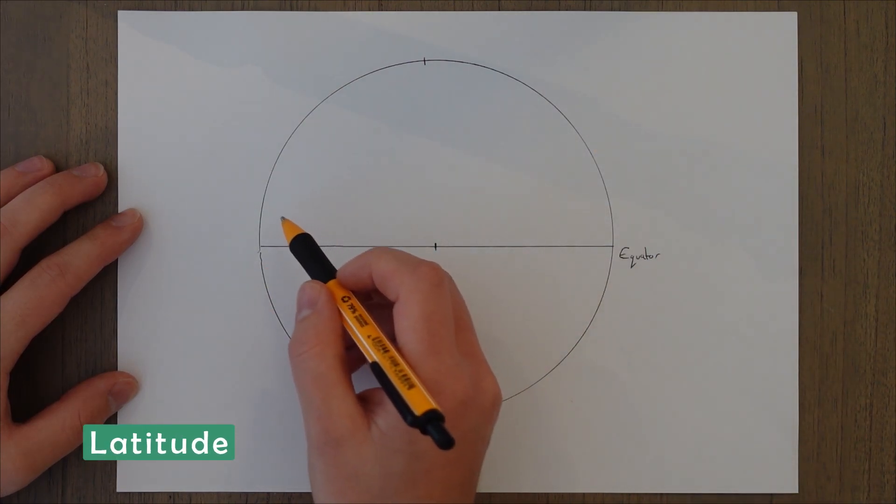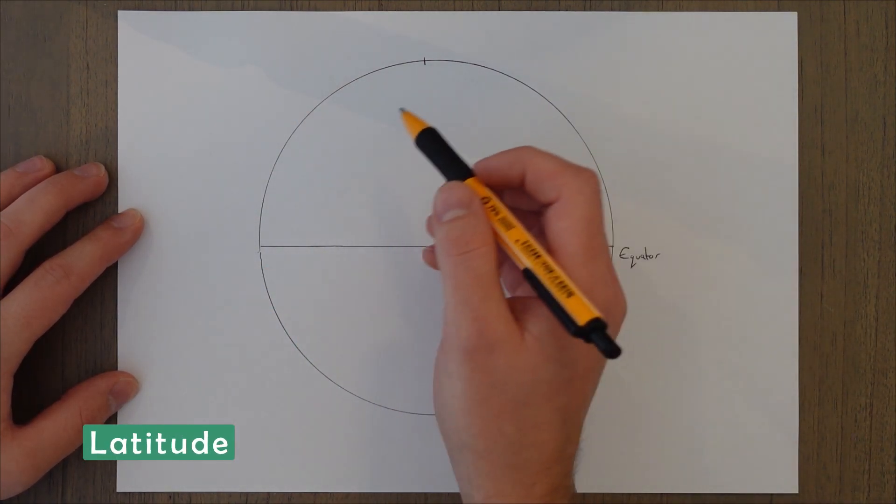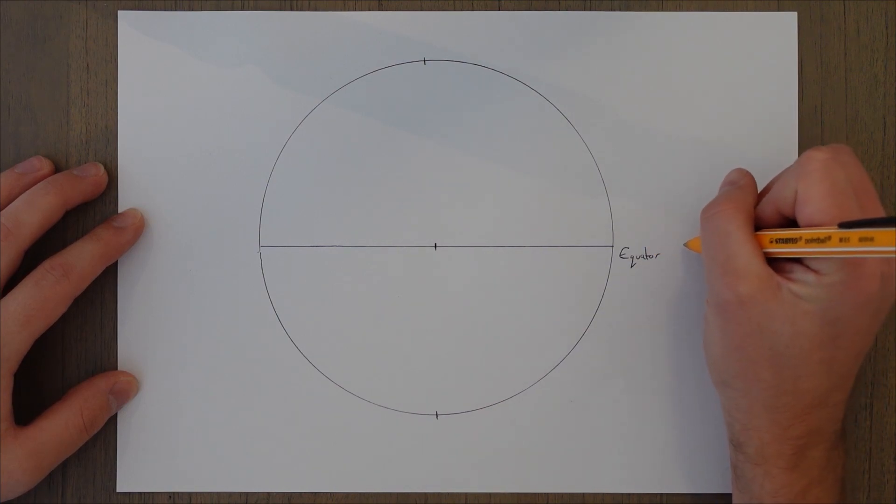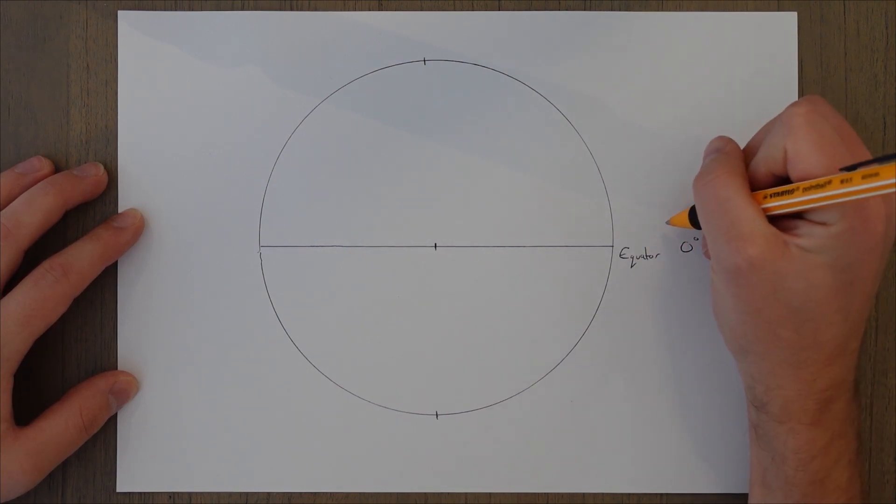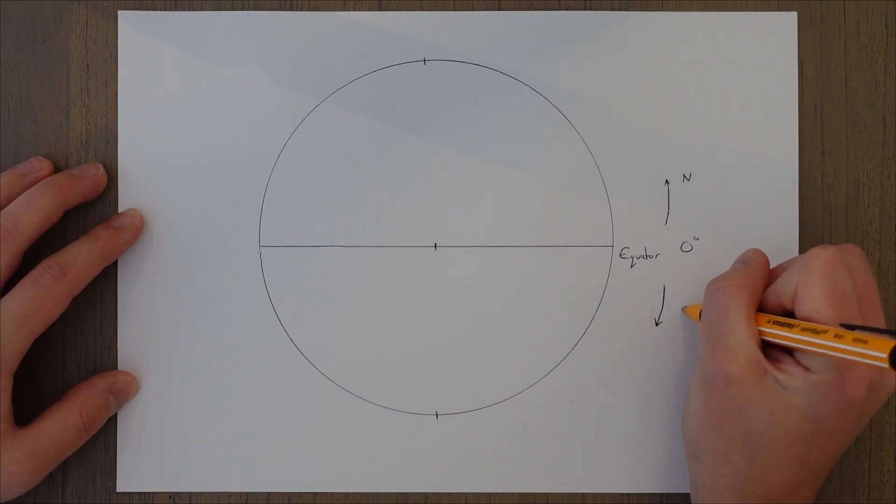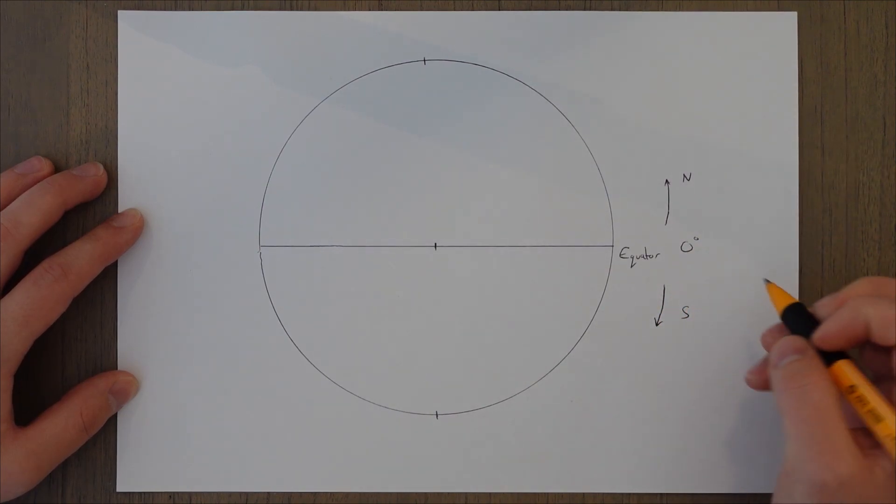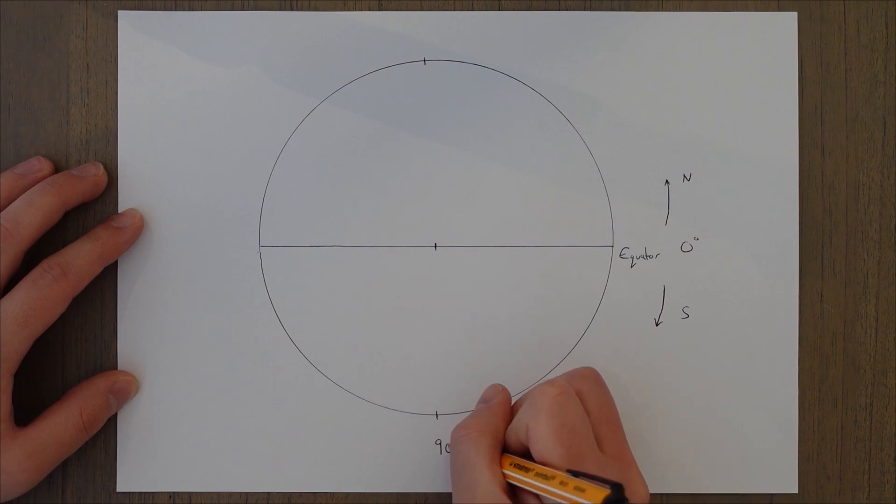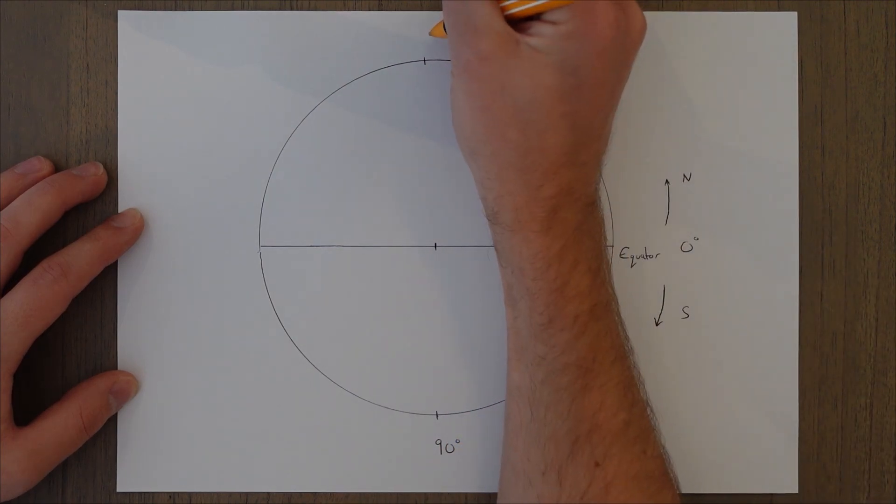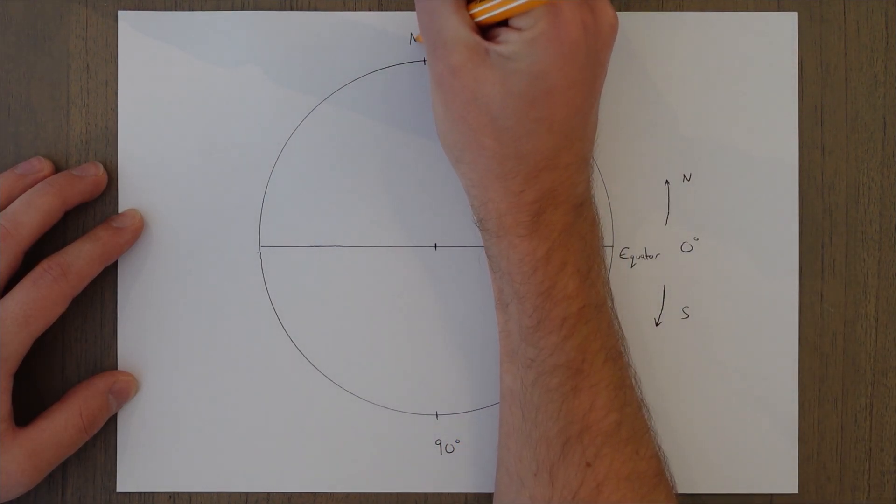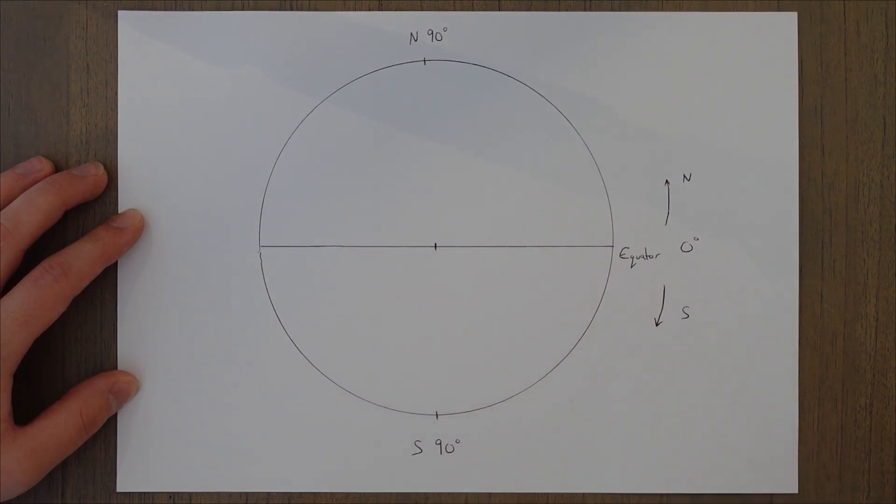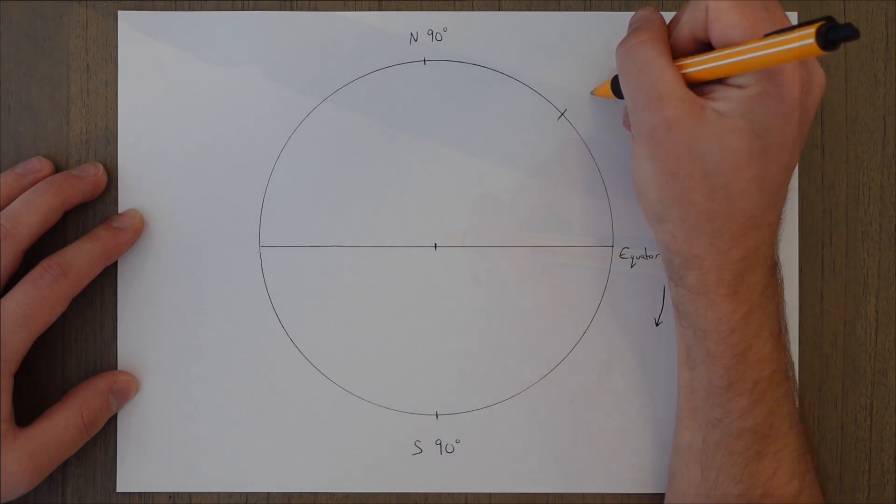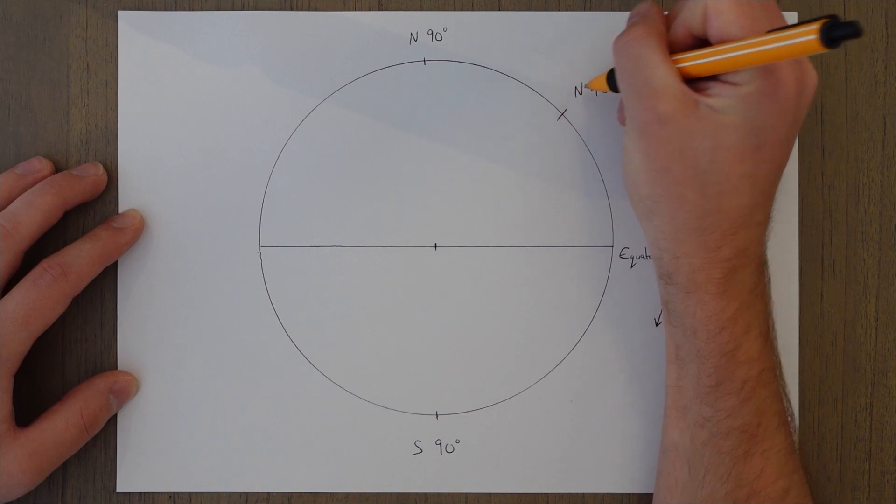Latitude is the one that goes horizontally, essentially. The zero point for latitude is the equator and we either go north or south of that point until we get to the poles where we have a maximum latitude of 90 degrees, either north or south. This gives us a two-figure reference, such as 45 degrees north.